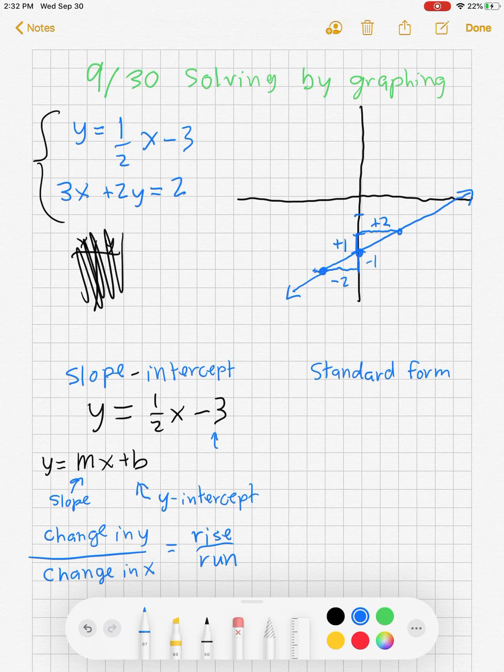Next we have standard form. Standard form is written Ax plus By equals C. Notice this one is solved for C, which is the constant. If I were to try to take slope intercept form to standard form we could, but we could also take standard form to slope intercept form.